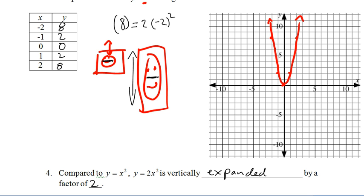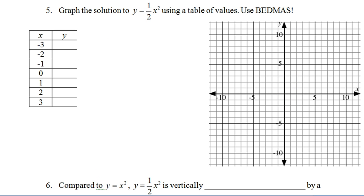So compared to x squared, y equals x squared, y equals 2x squared is vertically expanded. It's been stretched by a factor of 2. So basically on our original we went, so we started at 0, 0 on our original, and we went over 1, up 1. In this case, we go over 1, up 2. On our original we went over 2, up 4. On this one, we went over 2, up 8. So everything's twice as far from the x-axis.